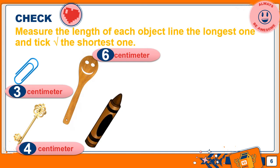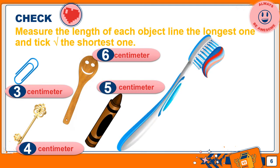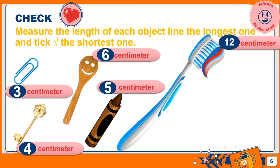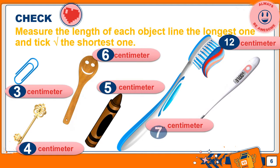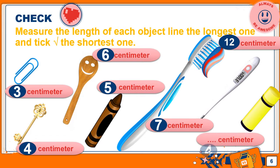This brown crayon measures 5 cm. This long toothbrush — I guess it will be the longest — measures 12 cm. This thermometer measures 7 cm. This glue measures 4 cm, the same as the key.